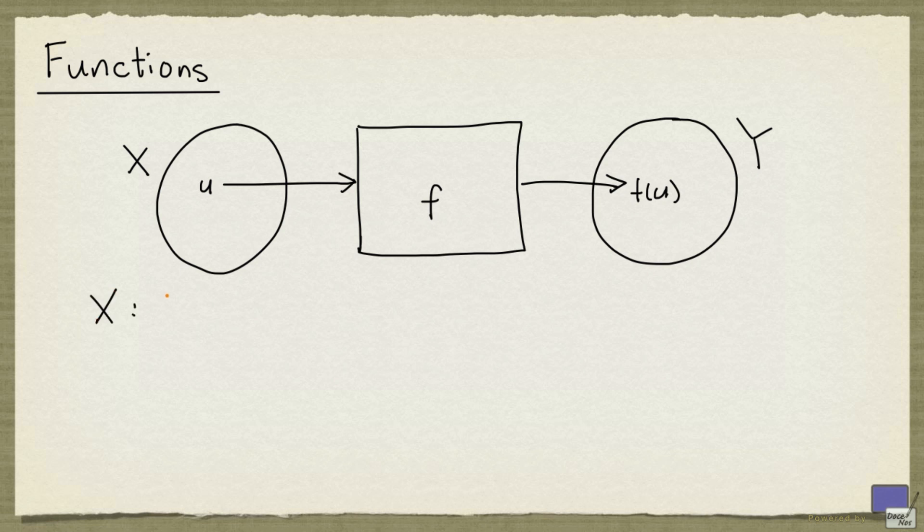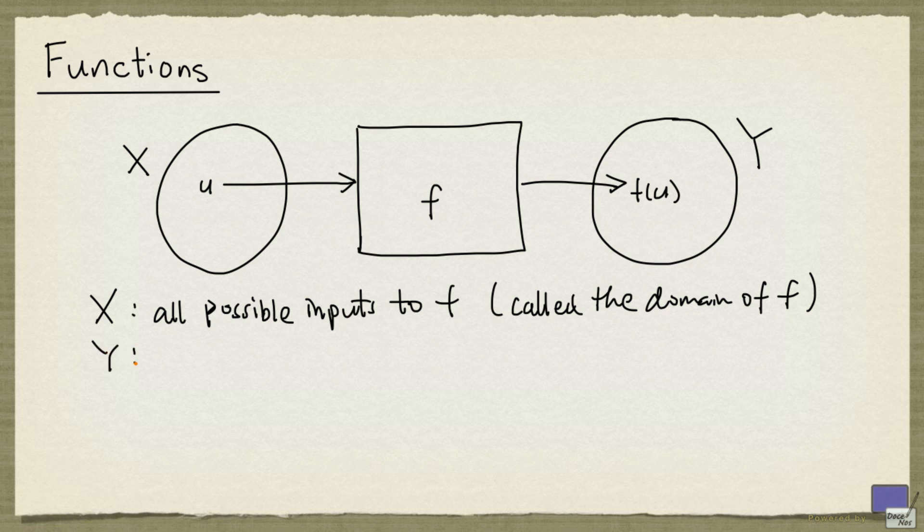Here, X is the set of all possible inputs, and it's called the domain of f. And the set Y is a set that contains all possible outputs of f, and it's called the codomain of f.